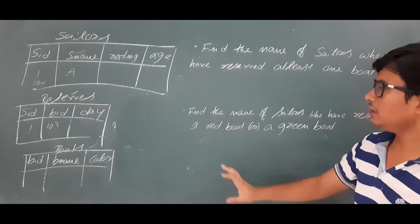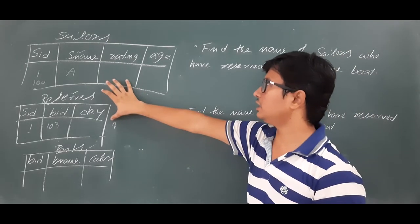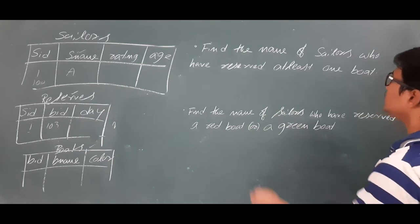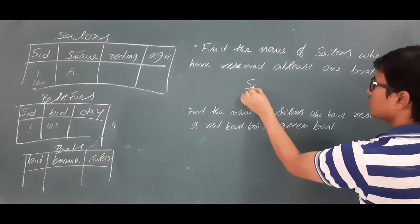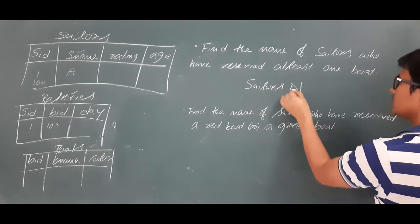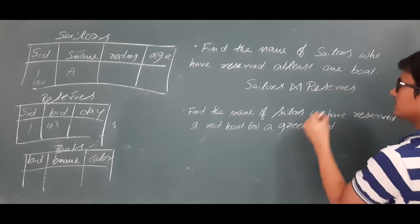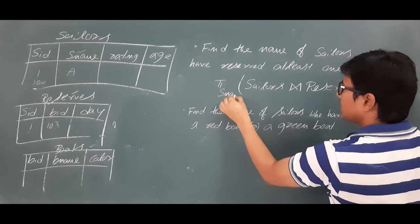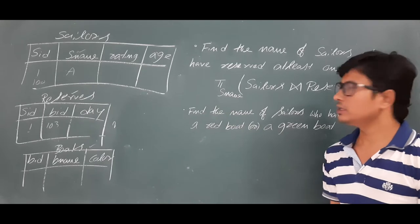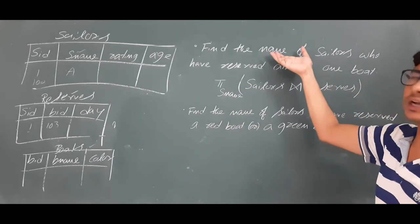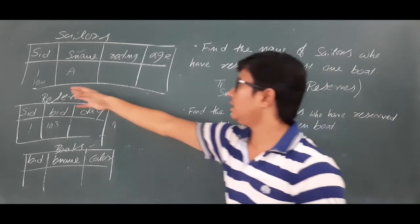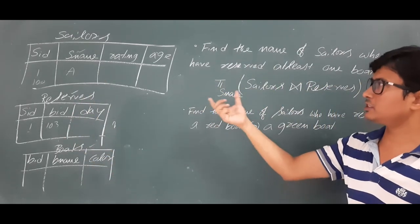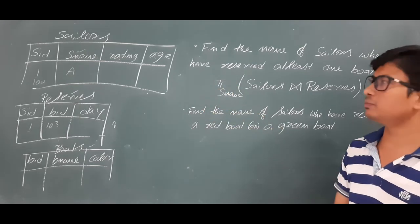I only need to depend on these two relations — sailors and reserves — to identify the relational algebra expression for this query. I have to apply the natural join between the sailors and reserves tables. Since there is no explicit condition other than 'at least one boat', I apply the natural join between sailors and reserves and get all the information of sailors who have reserved at least one boat.